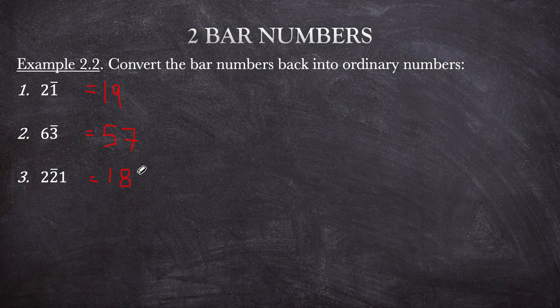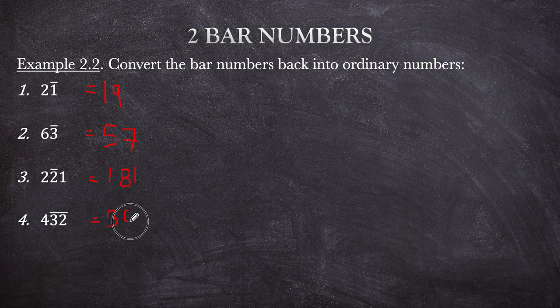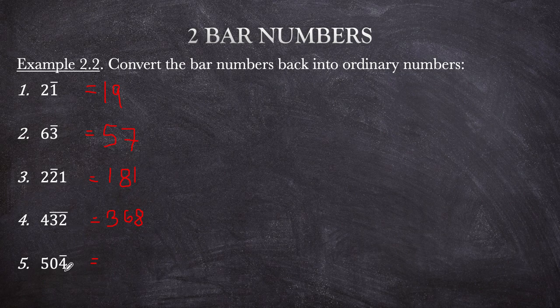For 4 bar 32: subtract 1 to get 3, then apply 'all from 9 and the last from 10.' This becomes 6, and then last from 10 gives 8. So 368. For 5 bar 04: note that only the 4 has a bar. Subtract 1 from 50 to get 49, then 'last from 10' gives 6. So the answers are: 19, 57, 181, 368, and 496.